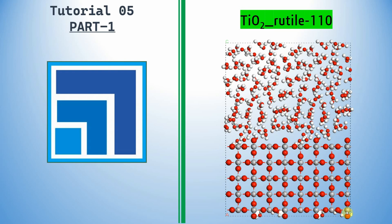Dear friends, this is my tutorial 5 in Material Studio. In this tutorial you can learn how to make this kind of metal oxide under water interfaces for molecular dynamics simulation. This is actually the TiO2 110 surface, and this is the water cluster.